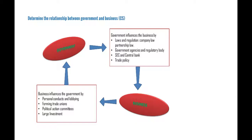As you can see in this chart here, business influences the government by personal conduct and lobbying, forming trade unions, political action committees, and large investments. While the government influences business by rules and regulations, agencies, central banks, and trade policies. So the government may regulate business, but business also has its own significant effects on the government itself.